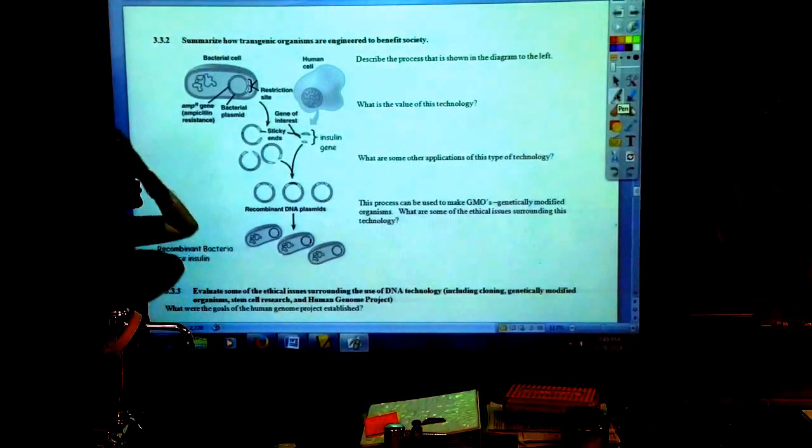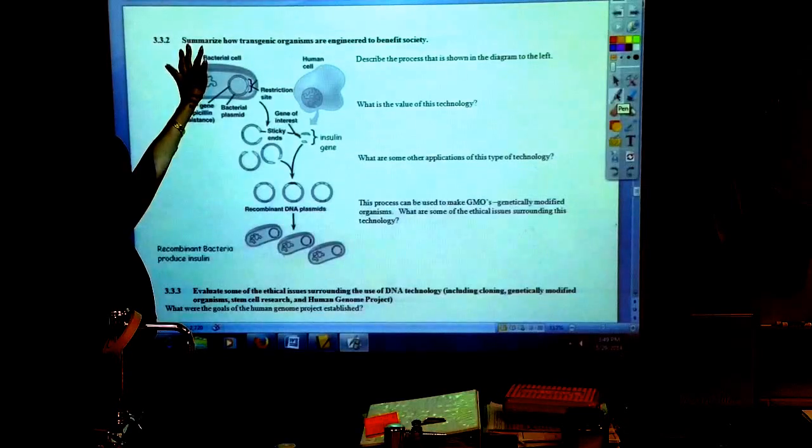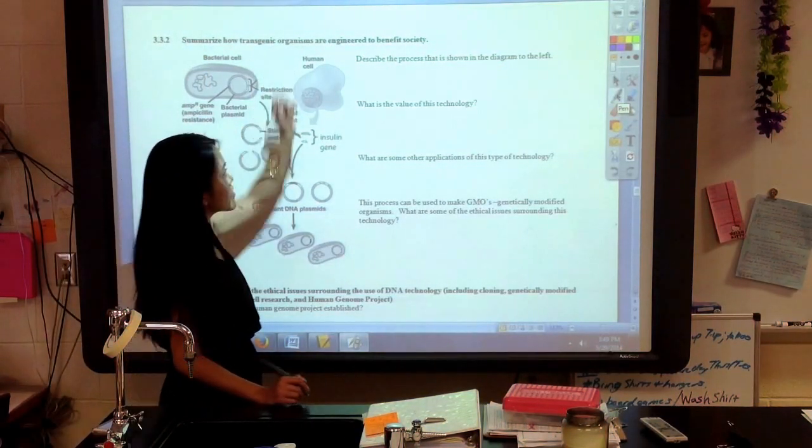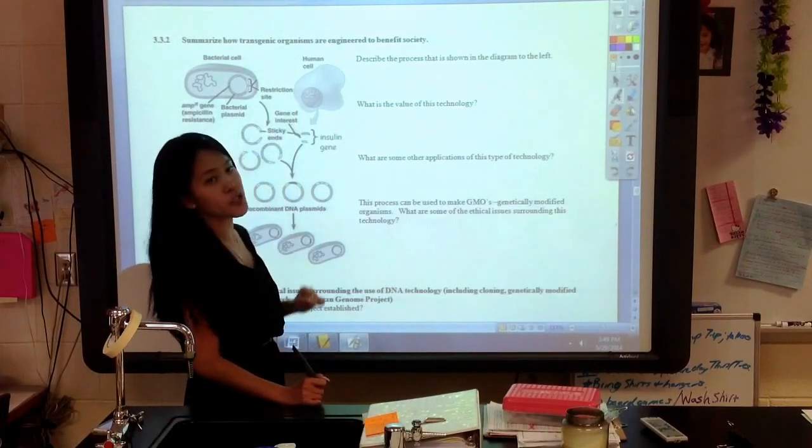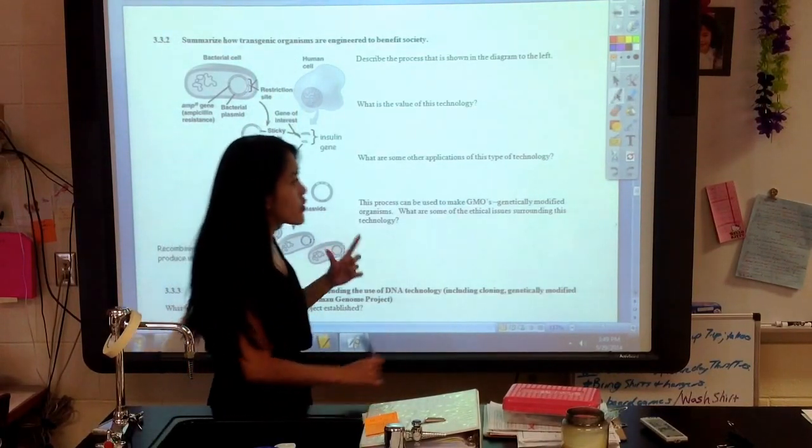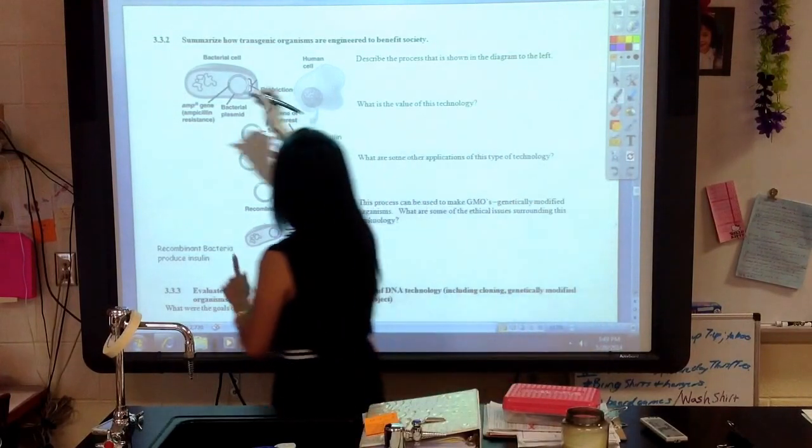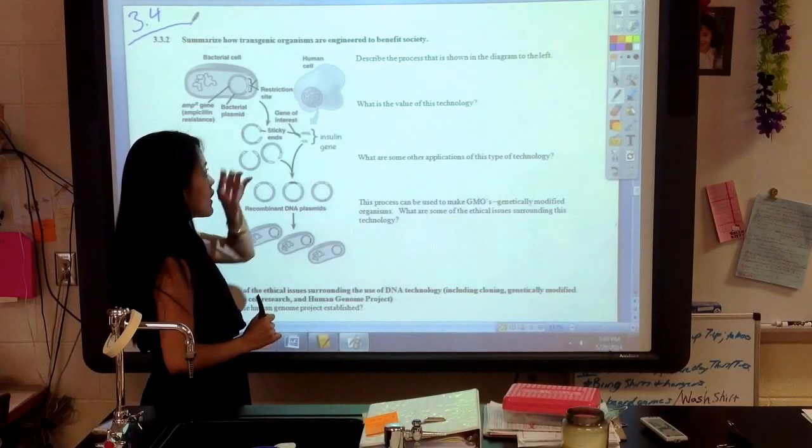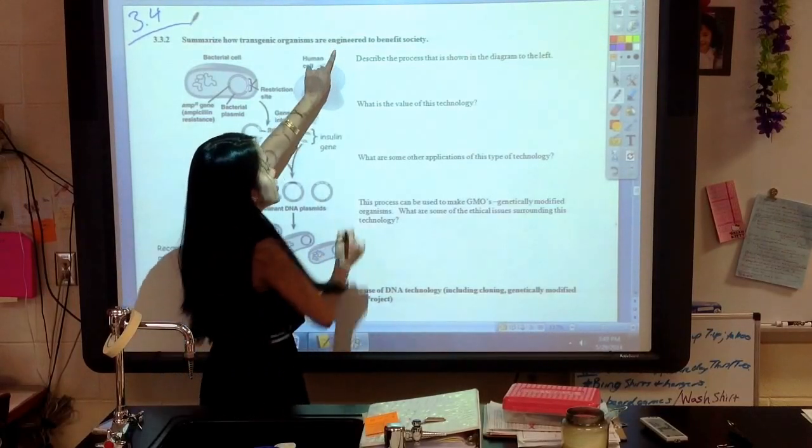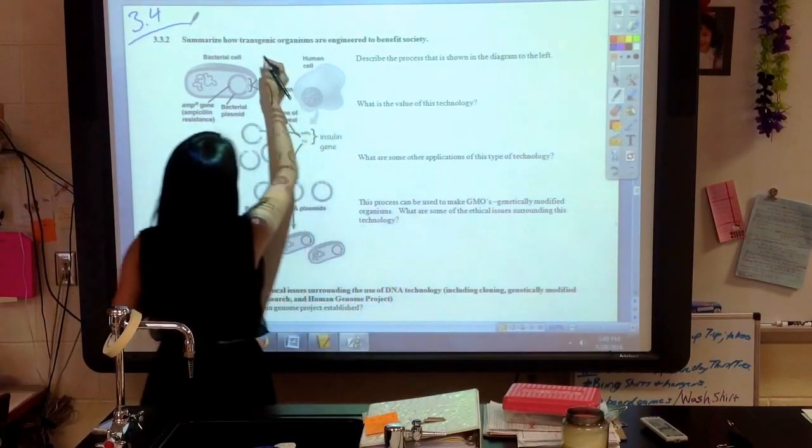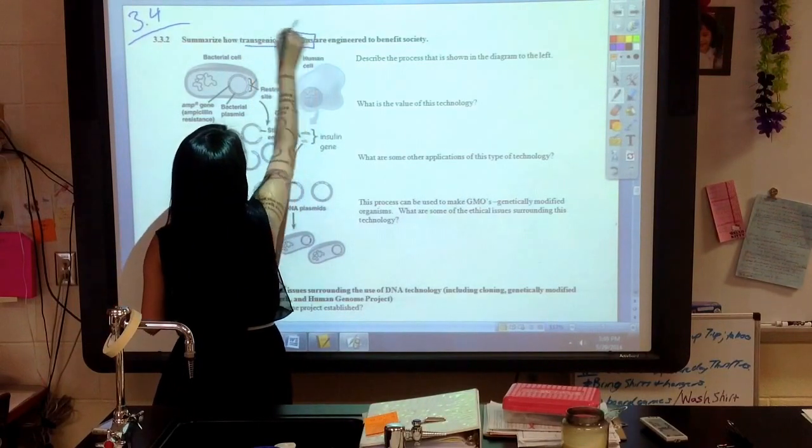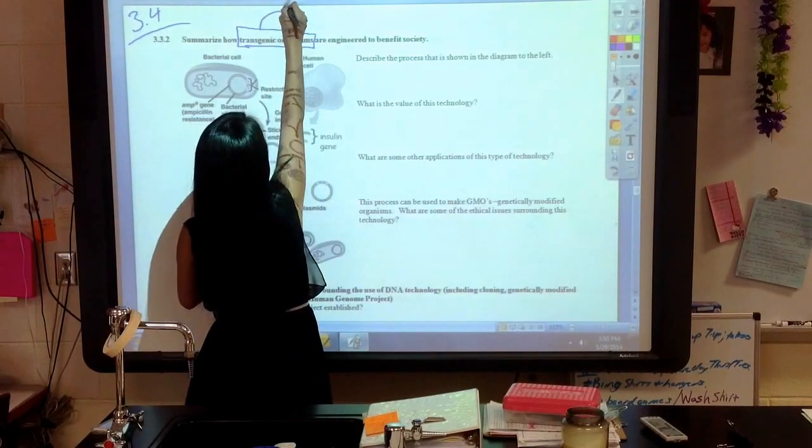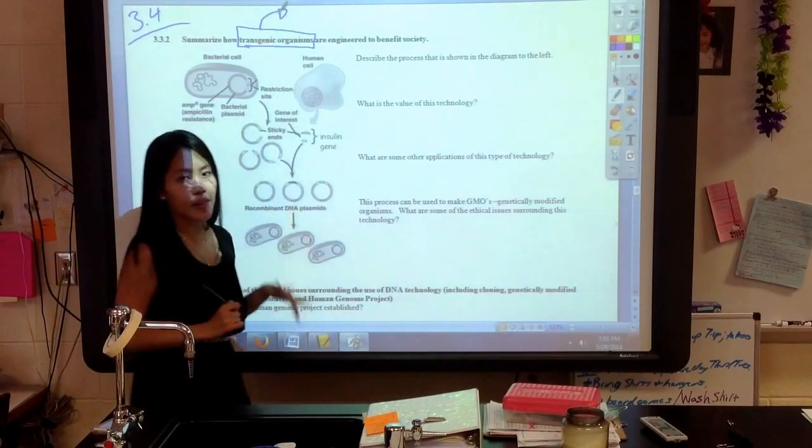One of the first things that we wanted to look at was genetic engineering. If you notice, you do want to pay attention to these objective sentences. It says that we need to be able to summarize how transgenic organisms are engineered to benefit society. This is where you'll want to be at on your notes. To be a transgenic organism, let's define that first.